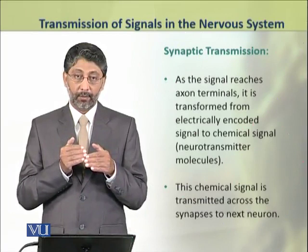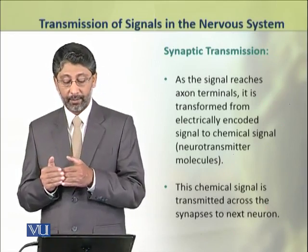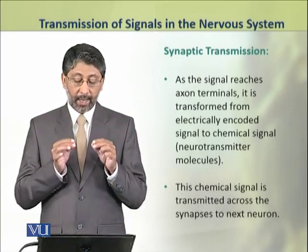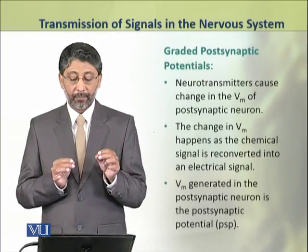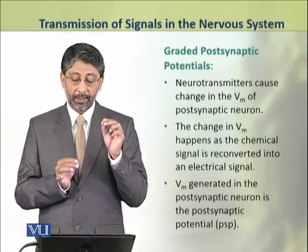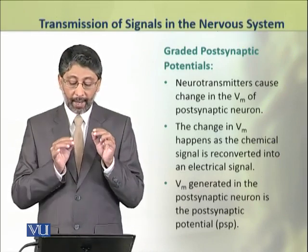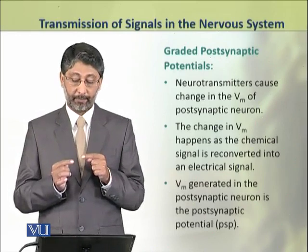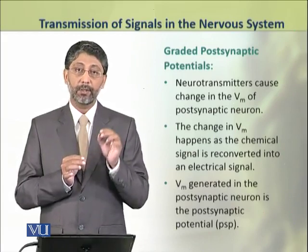When the signal reaches the axon terminals, it is transformed from electrically encoded signals into chemical signals in the form of neurotransmitter molecules. This chemical signal is then transmitted across the synapse to the next neuron. When the neurotransmitter reaches the post-synaptic neuron, it causes a potential change, converting the chemical signal back into an electrical signal. This membrane potential generated in the post-synaptic neuron is known as post-synaptic potential.